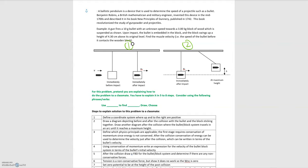It's pretty natural to split the ballistic pendulum into two parts. The first part involves a bullet being fired at some target, and we use conservation of momentum to understand what's happening before and after. Then we're adding in another part from the previous module: conservation of energy.